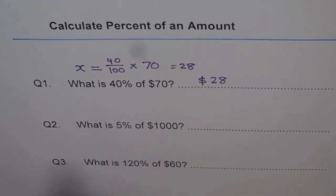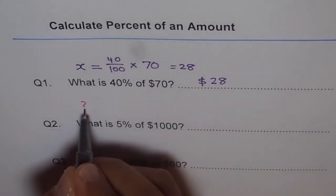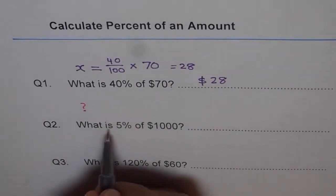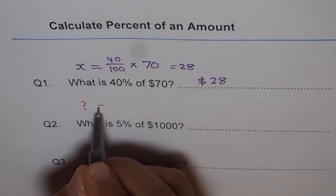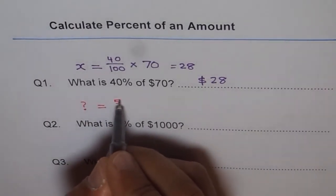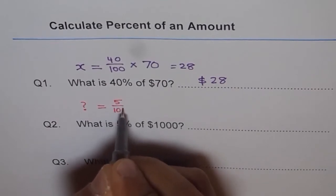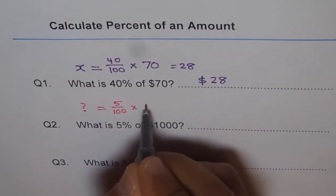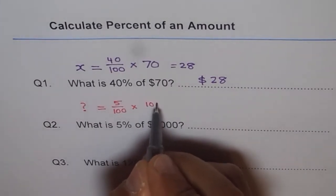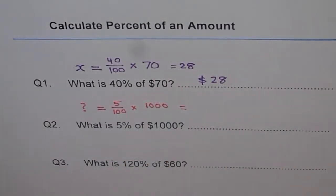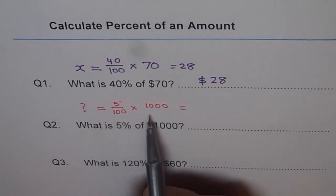What is — we don't know what, you can use a question mark. We will try to find out this number. 'What' — I don't know. 'Is' means equal to. 5% means 5 over 100. 'Of' means times 1000. Let's calculate — use your calculator. 5% of 1000.